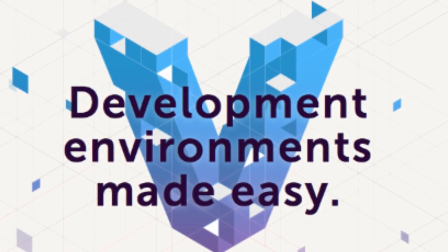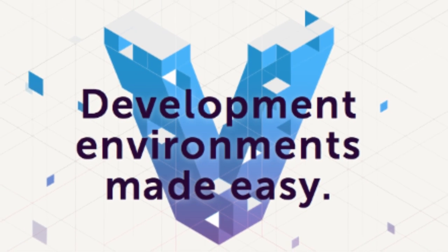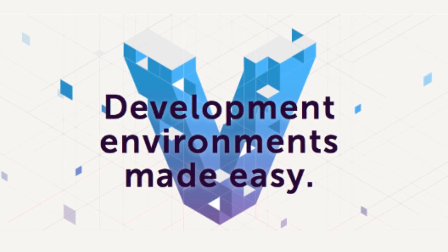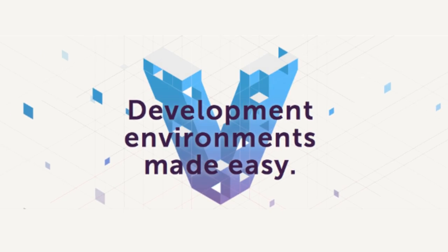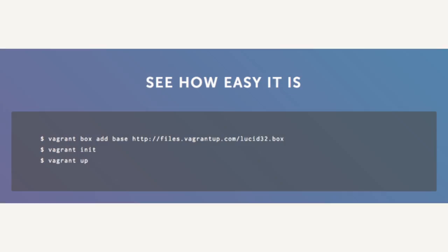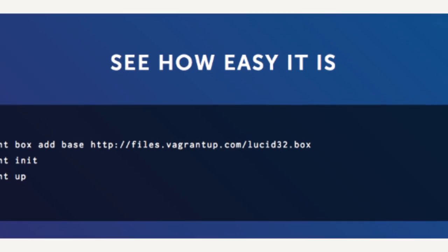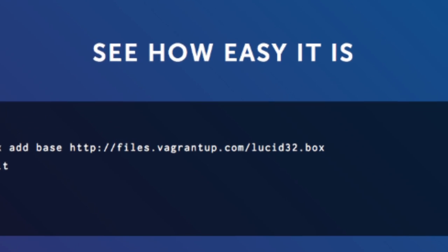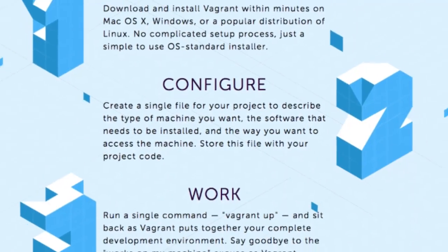Vagrant is a complete development tool that creates, manages, and distributes portable development environments. Developers and system administrators can create a development environment once, encode that configuration in a single file, share it with other people, and they could have their complete development environment up and running in minutes or hours, instead of days or weeks. That's on Mac, Windows, or Linux — it doesn't matter what platform you're working on.